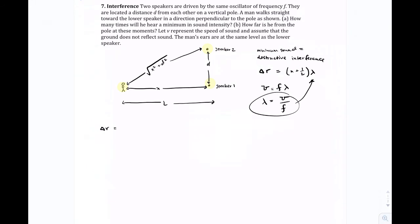So the path length difference, delta R, is going to be X squared plus D squared, which is this thing, minus the other path length, which is X. And we know all of this has to be N plus one-half times lambda, which we know is V over frequency. So here's our equation.